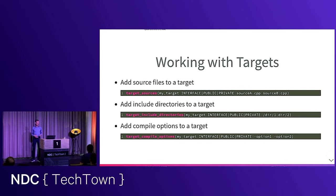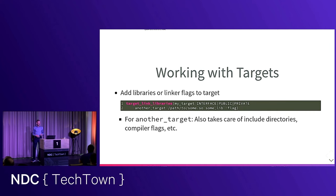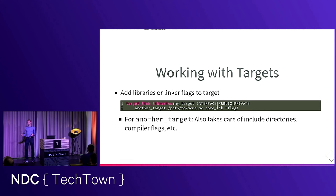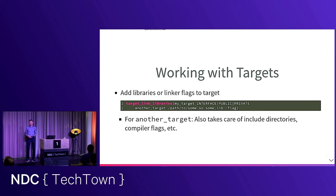Modern CMake works with build targets. You create executable targets and library targets with add_executable and add_library. For those targets you add sources with target_sources, include directories with target_include_directories, and compile options with target_compile_options. You can add libraries to link against with target_link_libraries. In modern CMake, if you specify another target, it will also make sure you get the include paths and compiler options you need to compile and link against that other target automatically.